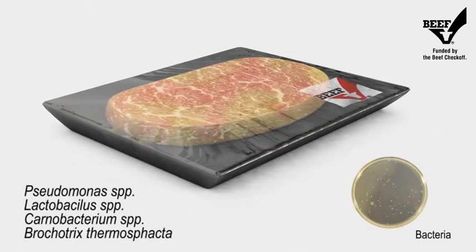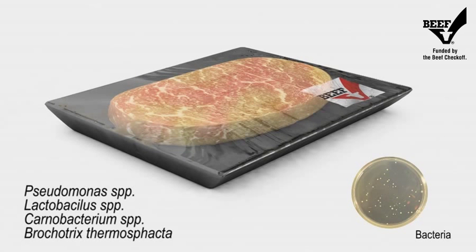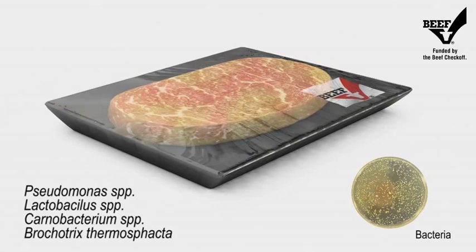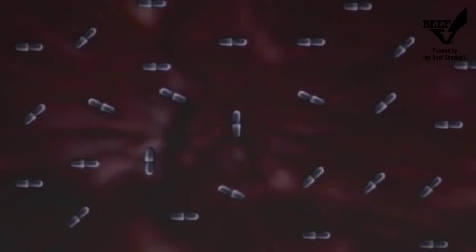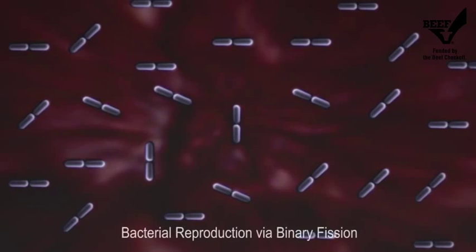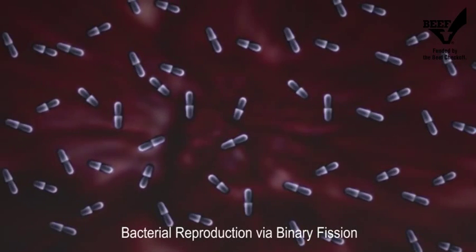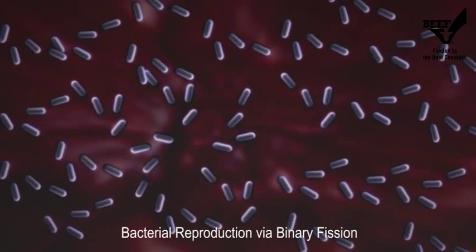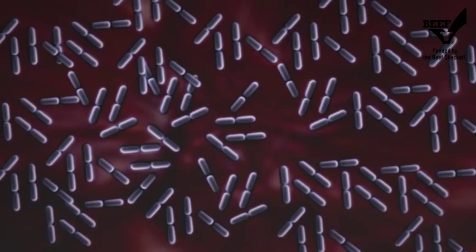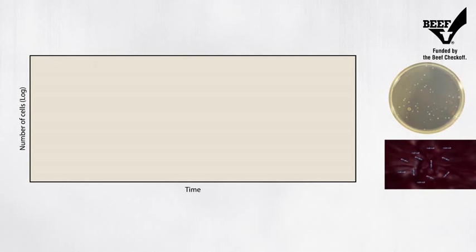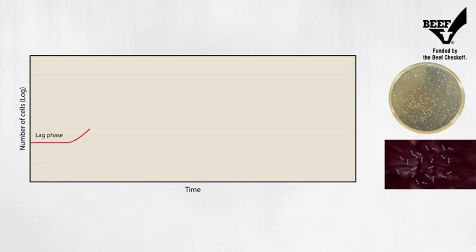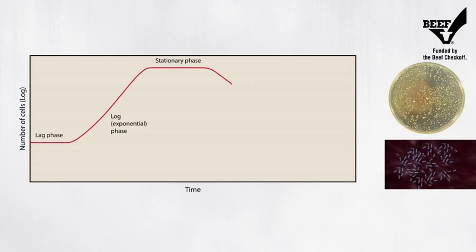The predominant spoilage bacteria in beef products are Pseudomonas species, Lactobacillus, and other bacteria species. Most all spoilage bacteria are non-pathogenic, and they will not cause illness. Nonetheless, these bacteria drastically affect the organoleptic qualities of beef. Normal bacteria growth occurs in four stages: lag phase, log phase, stationary phase, and death phase.